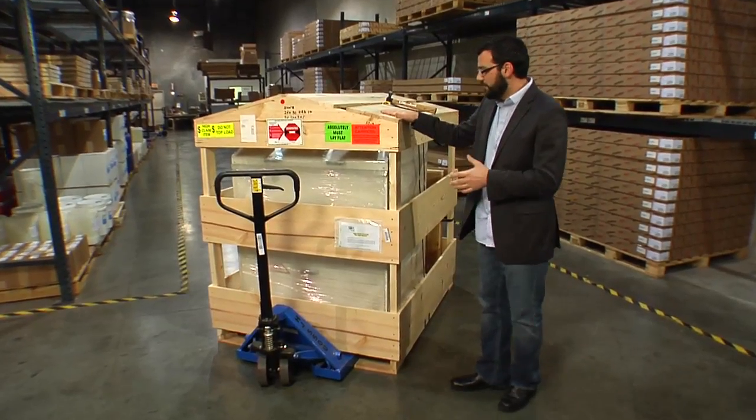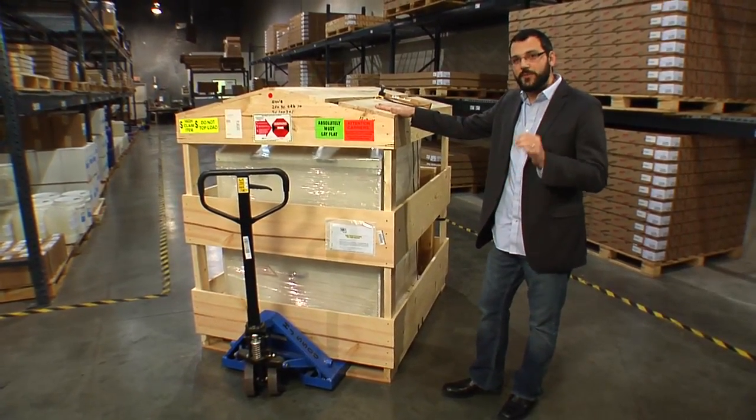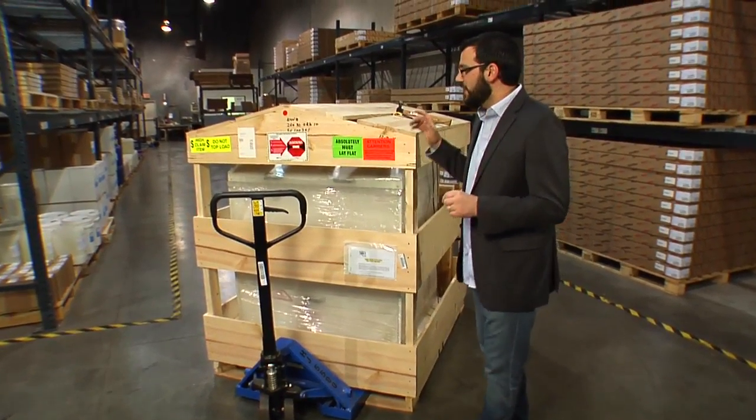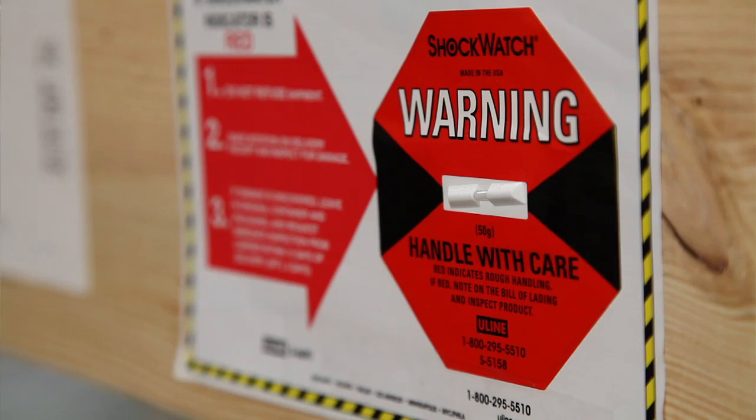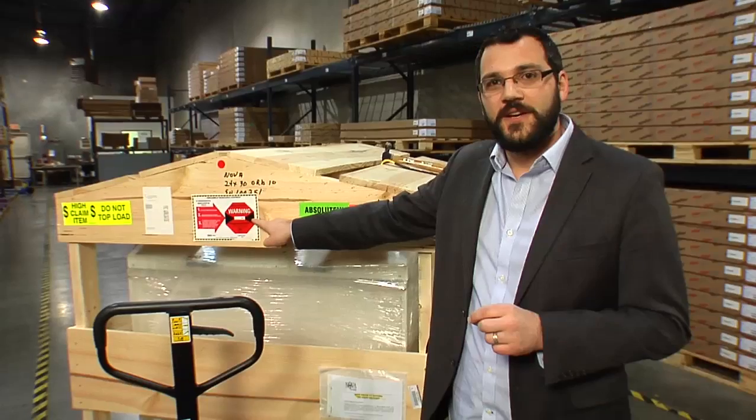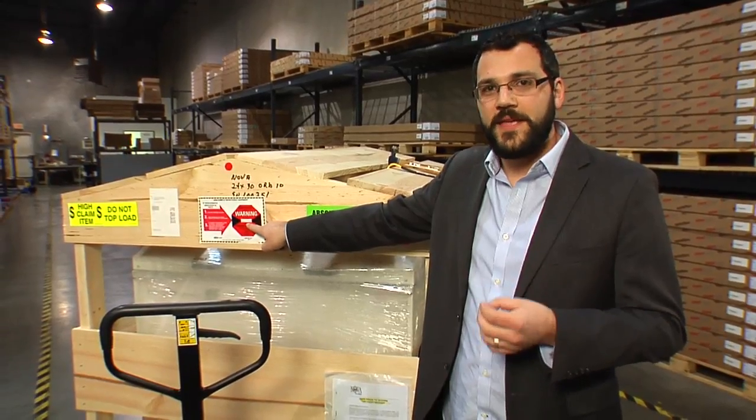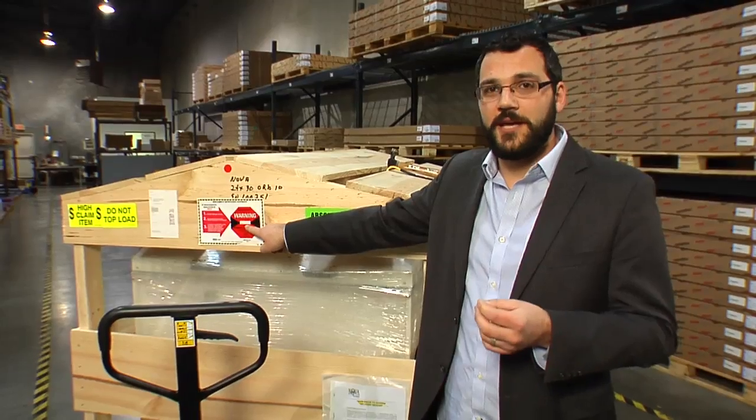What we have here is the Orbital 10 in the crate, just the way you'll receive it after you order the equipment. The first thing to note when you receive the Orbital 10 is to look at the shock monitor label that is on the front of the crate. If the monitor is white, everything is fine. If it happens to be red, that means it has been shaken or possibly damaged during shipping.